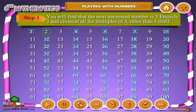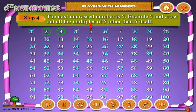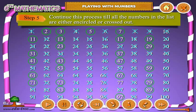Step three: the next uncrossed number is three — circle three and cross out all the multiples of three other than three itself. Step four: the next uncrossed number is five — circle five and cross out all the multiples of five other than five itself. Step five: continue this process until all the numbers in the list are either encircled or crossed out.